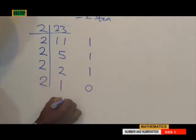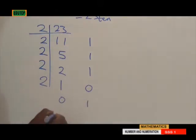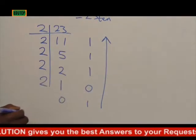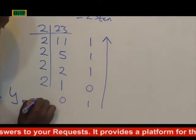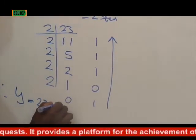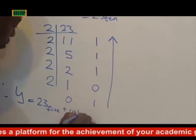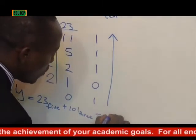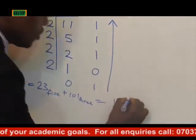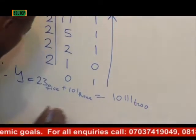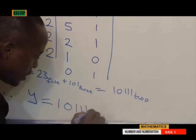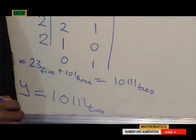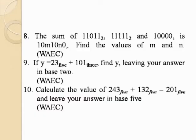Then 1 divided by 2 is not possible. We will now take these answers upward to get our final answer. Therefore, 23 in base 10 equals 1, 0, 1, 1, 1 in base 2 — that is 10111 base 2, which is our final answer.